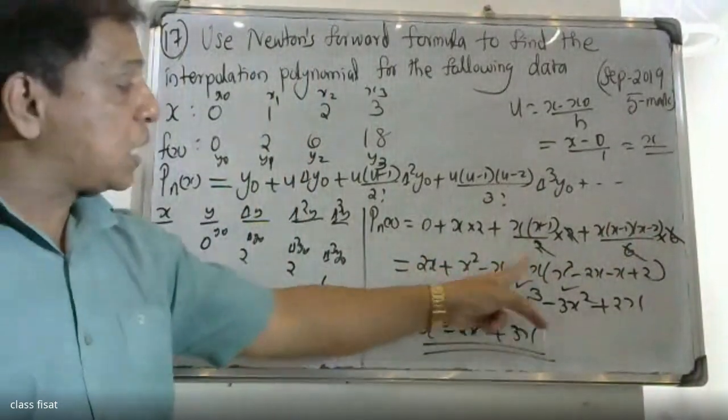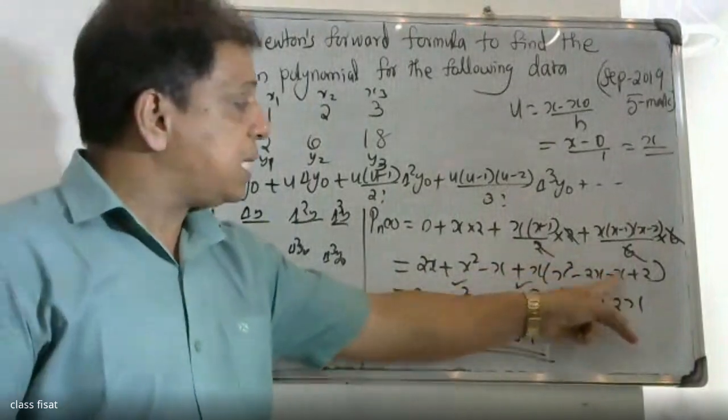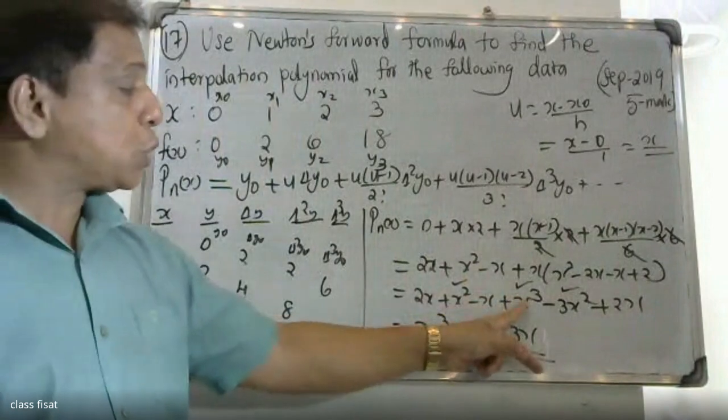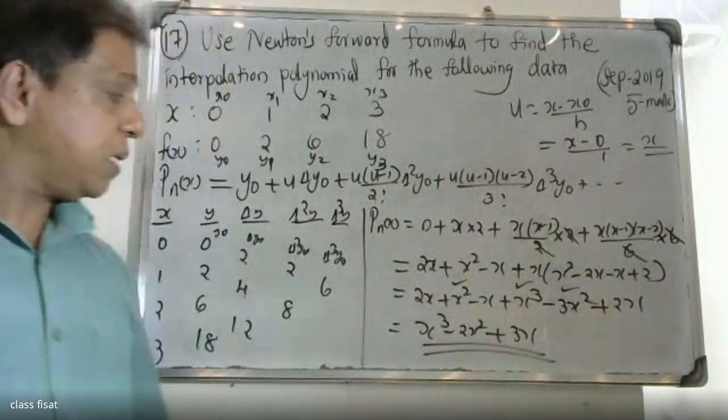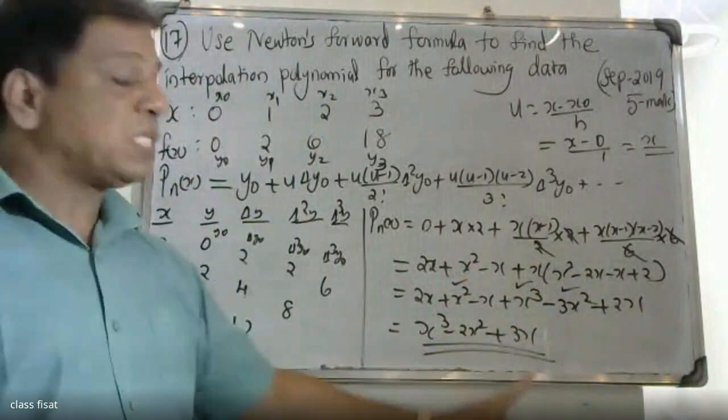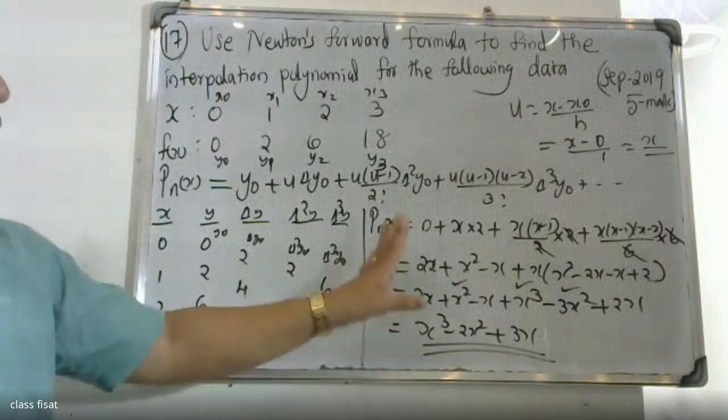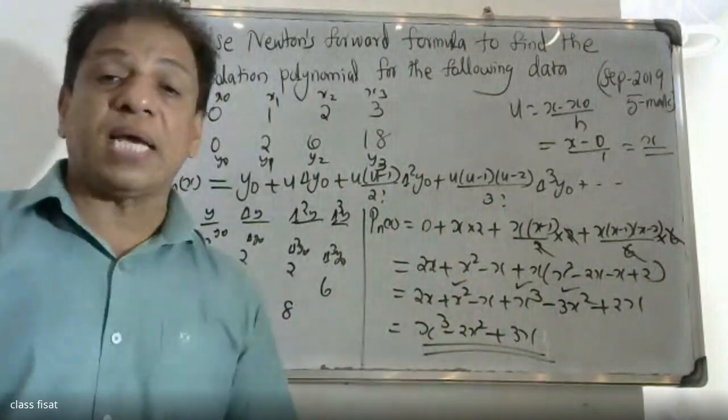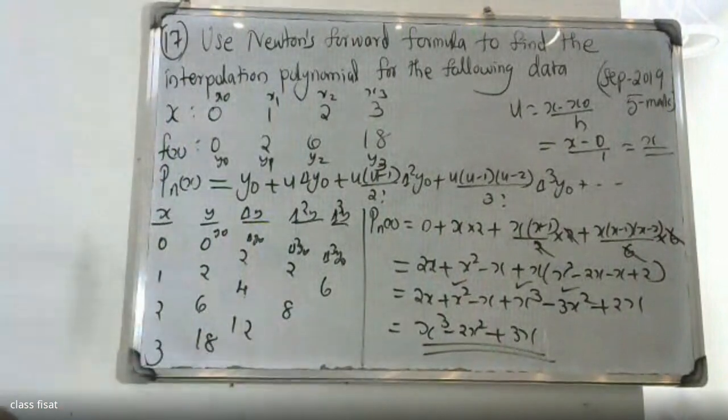x square minus x x plus x square minus x square plus x plus x square minus 3x square plus 2x so x cube minus 2x square plus 3x. So always remember I'm going to get the polynomial equation like that x cube minus 2x square plus 3x.